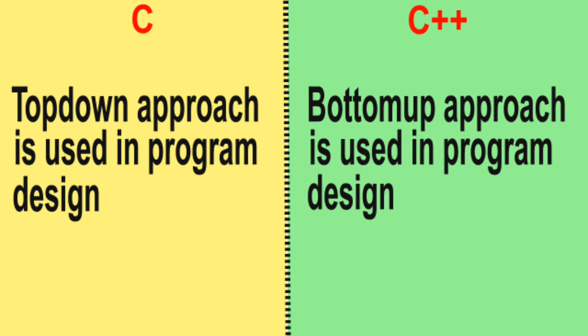Difference number 3: C uses a top-down approach in program design. C++ uses a bottom-up approach in program design.